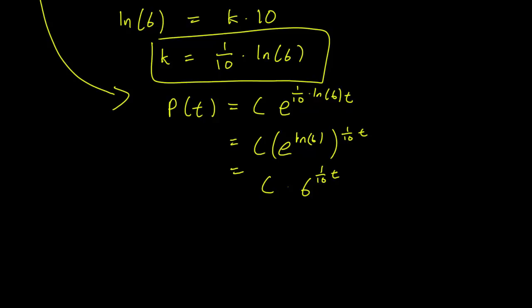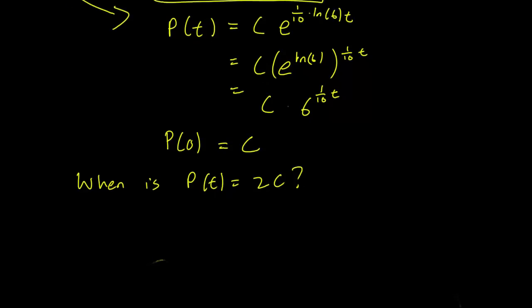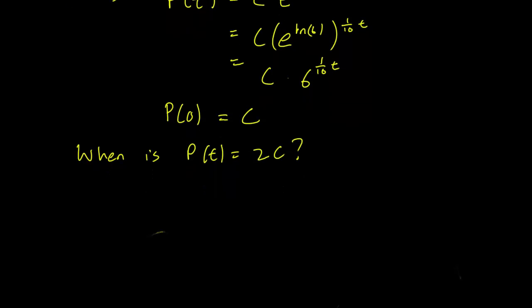So we need to see how to get from double what P(0) was. Using this information, we have P(0) is equal to C, obviously. And the question that we are asking is, when is P(t) equal to 2C? Let's try to answer that question. That will give us what t is correct so that the population doubles.